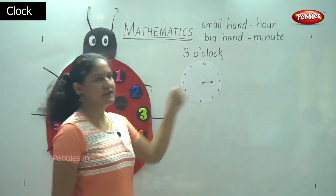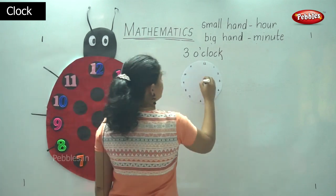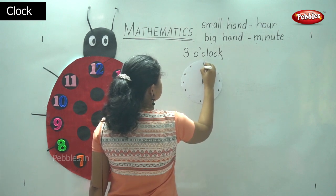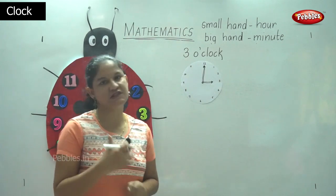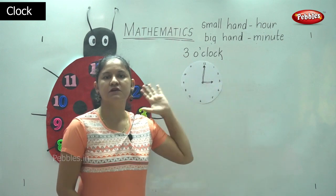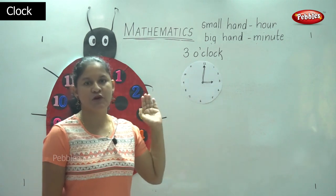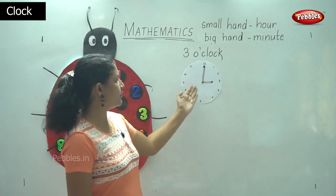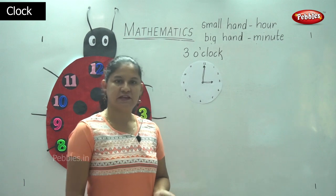I am going to mark the time for 3 o'clock. When it is 3 o'clock, the small hand — the hour hand — will be facing number 3, and the big hand — the minute hand — will face or point towards number 12. So the time is read as 3 o'clock. The small hand points towards number 3 and the big hand points towards number 12.